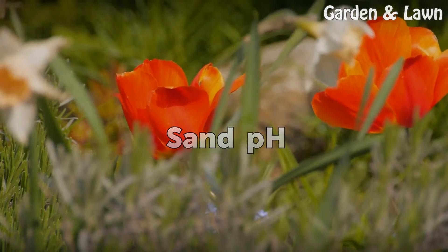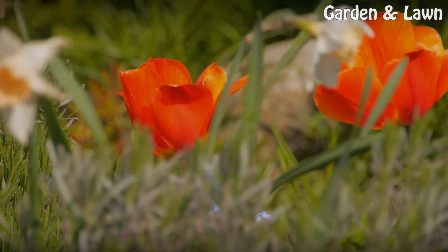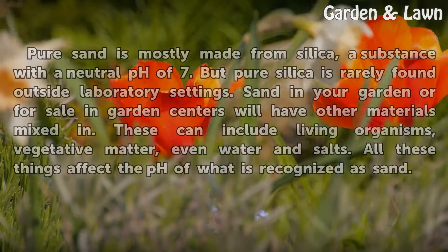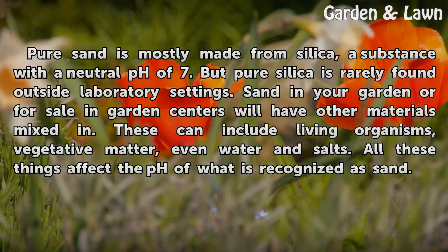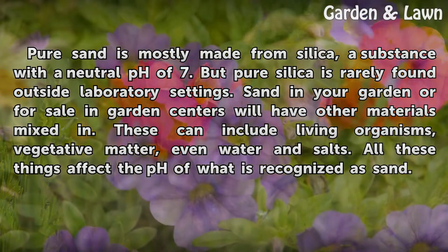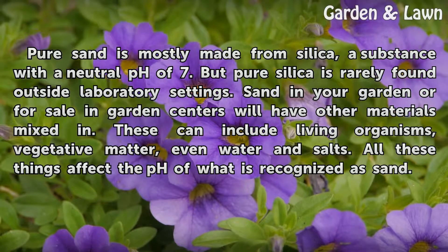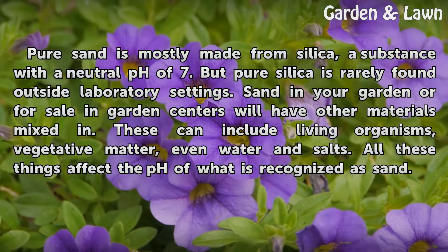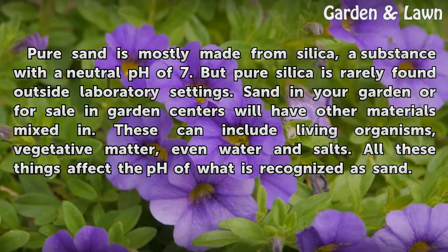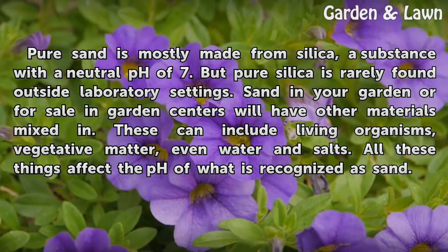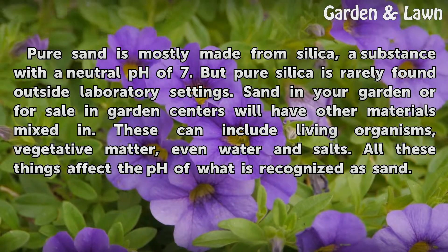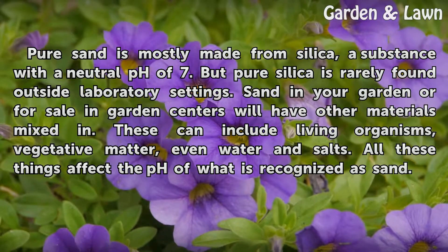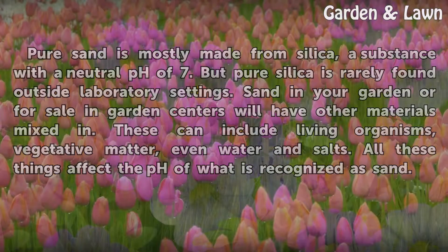Sand pH. Pure sand is mostly made from silica, a substance with a neutral pH of 7. But pure silica is rarely found outside laboratory settings. Sand in your garden or for sale in garden centers will have other materials mixed in. These can include living organisms, vegetative matter, even water and salts. All these things affect the pH of what is recognized as sand.